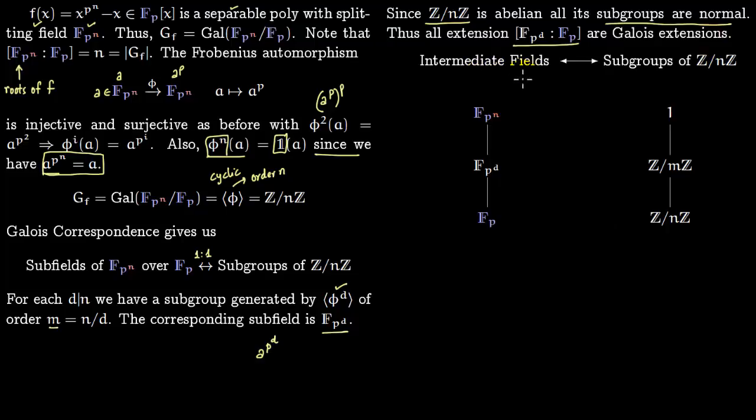You have one-to-one correspondence between intermediate fields and subgroups of Z/nZ. F_(p^n) corresponds to Z/nZ. Corresponding to F_(p^d) you have Z/mZ where m is precisely n/d.